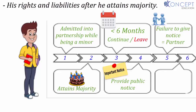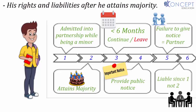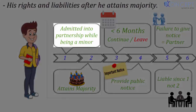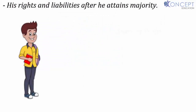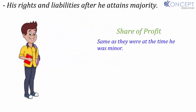If he elects to become a partner, he becomes personally liable to third parties for all acts done by the firm since he was admitted to its benefits — not just acts done after attaining majority, but all acts since he was admitted as a minor. His share of profits would continue at the same ratio as when he was a minor, unless all partners agree on a different ratio.